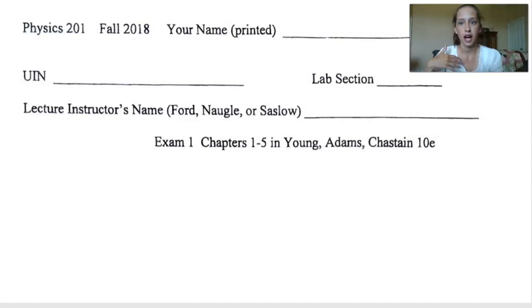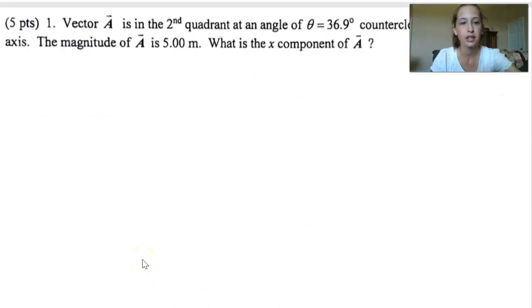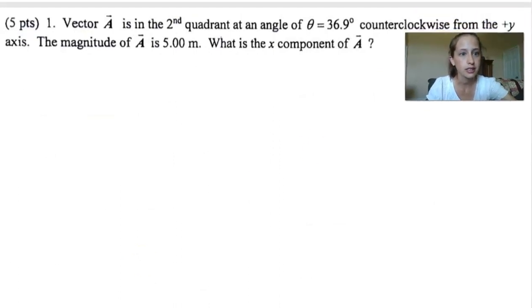So I'm starting with the 2018 version of the Physics 201 Exam 1, because that's what I have access to. Let's start with number 1. Vector A is in the second quadrant at an angle theta equals 36.9 degrees counterclockwise from the positive y-axis. The magnitude of A is 5.00 m. What is the x component of A?